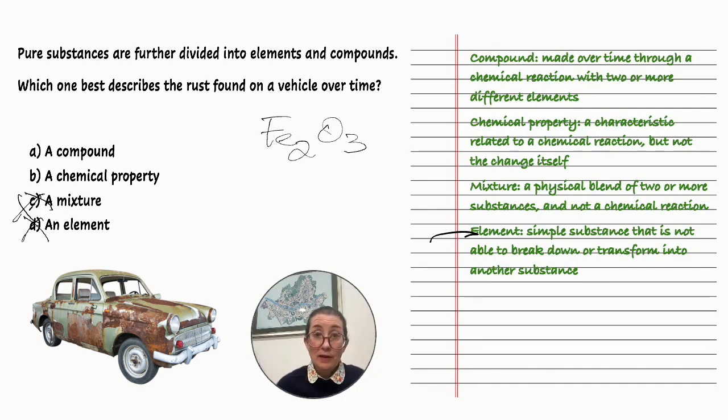A chemical property. A chemical property is a characteristic related to a chemical reaction, but not the change itself. So that's not it. A compound. A compound is made over time through a chemical reaction with two or more different elements.